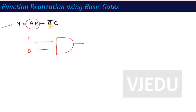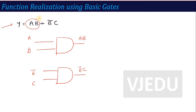Now to form the second term B̄·C, I need another AND gate. This AND gate will have output B̄C. One input is C and the other input is B̄. So the first AND gate generates AB and the second AND gate generates B̄C. Where multiplication appears, use an AND gate; where addition appears, use an OR gate.